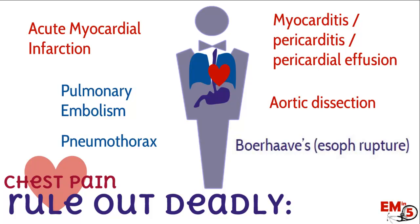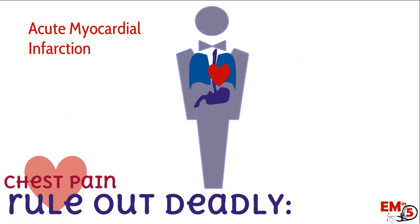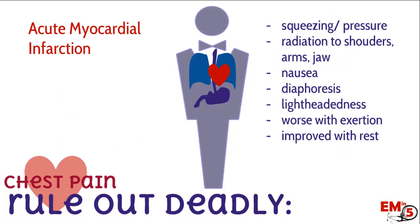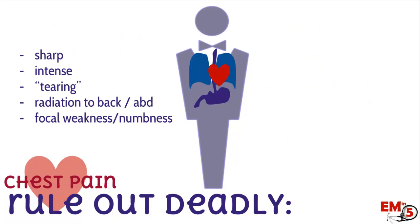Let's talk about which things in your history and physical might direct you towards one of these six, starting with history. In a patient having a heart attack, they might tell you the pain is more squeezing or pressure-like, radiating to the jaw or the arms, that they're really sweaty, lightheaded, nauseous, and that it's worse with exertion.